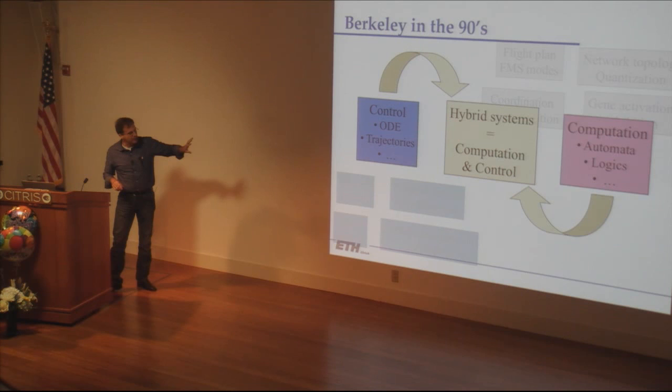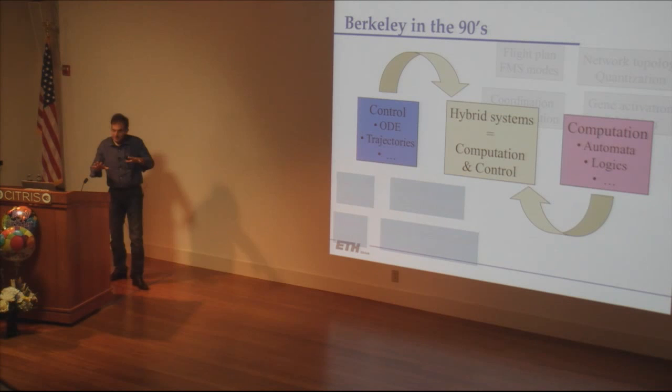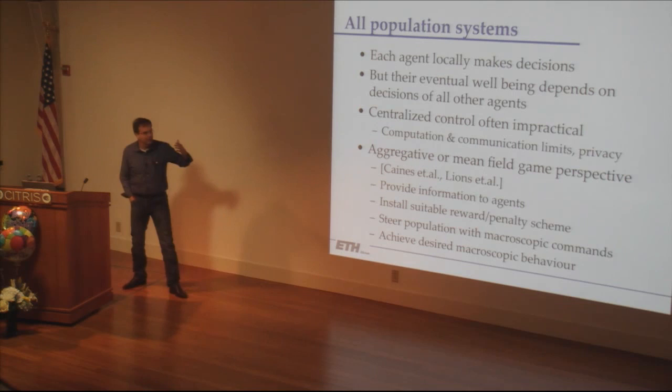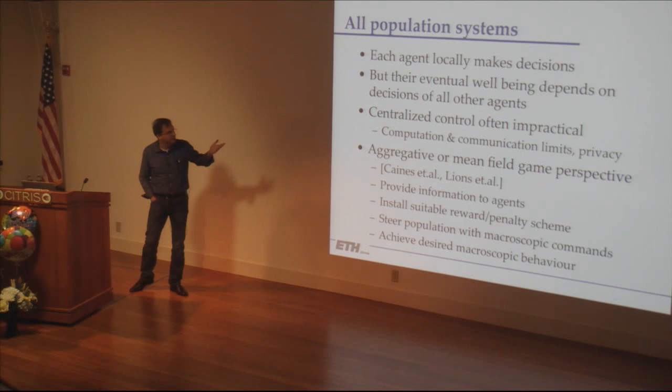The other thing these systems have in common is they're all large-scale systems that comprise many components, and each component has decision-making of its own. There's local decision-making that is driven at a higher level by some global constraints — which imply, for example, that the well-being of the agents depends not only on their own decision but also on the decisions that everyone else makes.